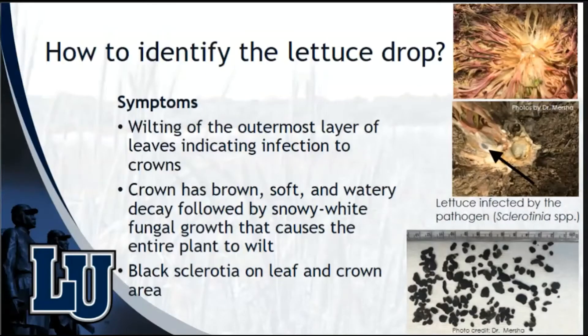Lettuce drop disease symptoms can be identified by looking for wilting symptoms on the outermost layer of the leaves, which will indicate infection to the crown. Once the pathogen has infected the plant, the crown will have brown lesions or spots which will turn into soft tissues or watery decay, followed by snowy white fungal growth, which will cause the entire plant to wilt or drop — and this disease symptom is referred to as lettuce drop.